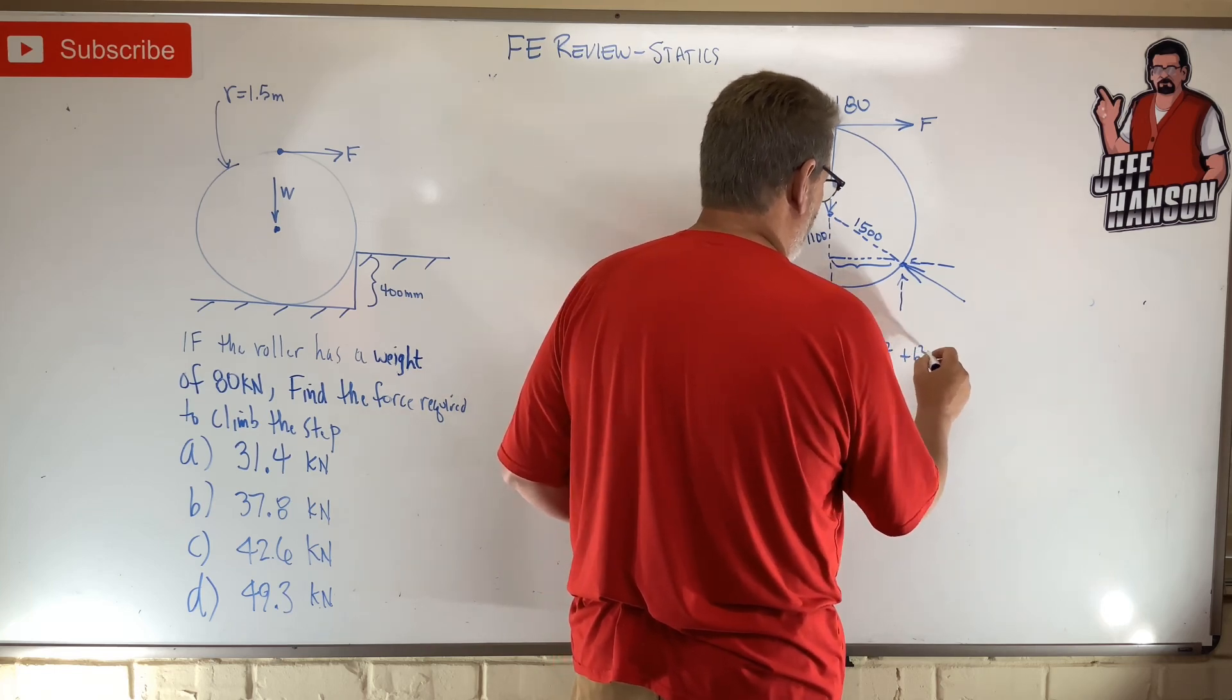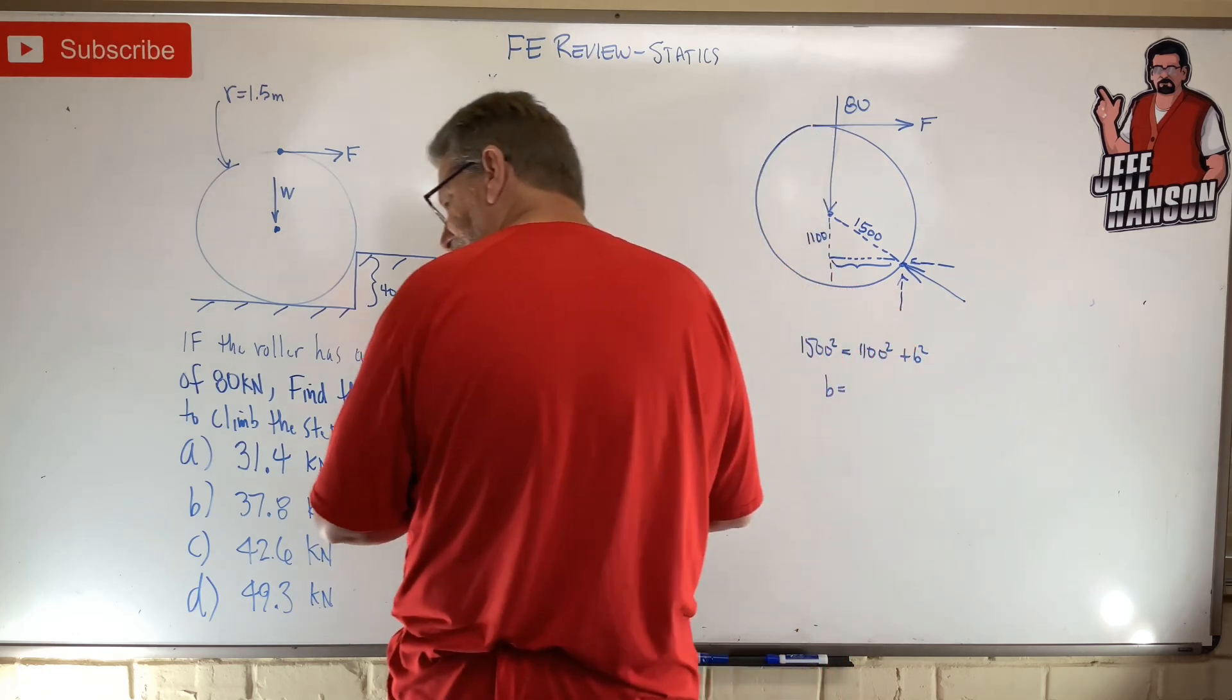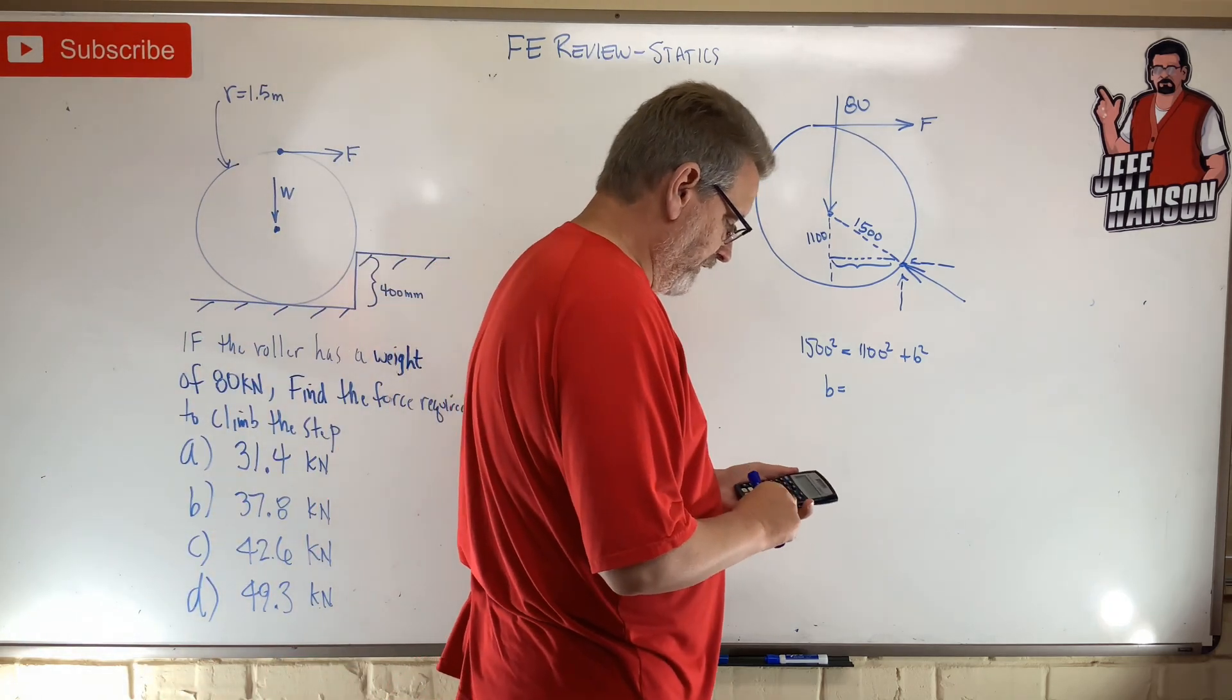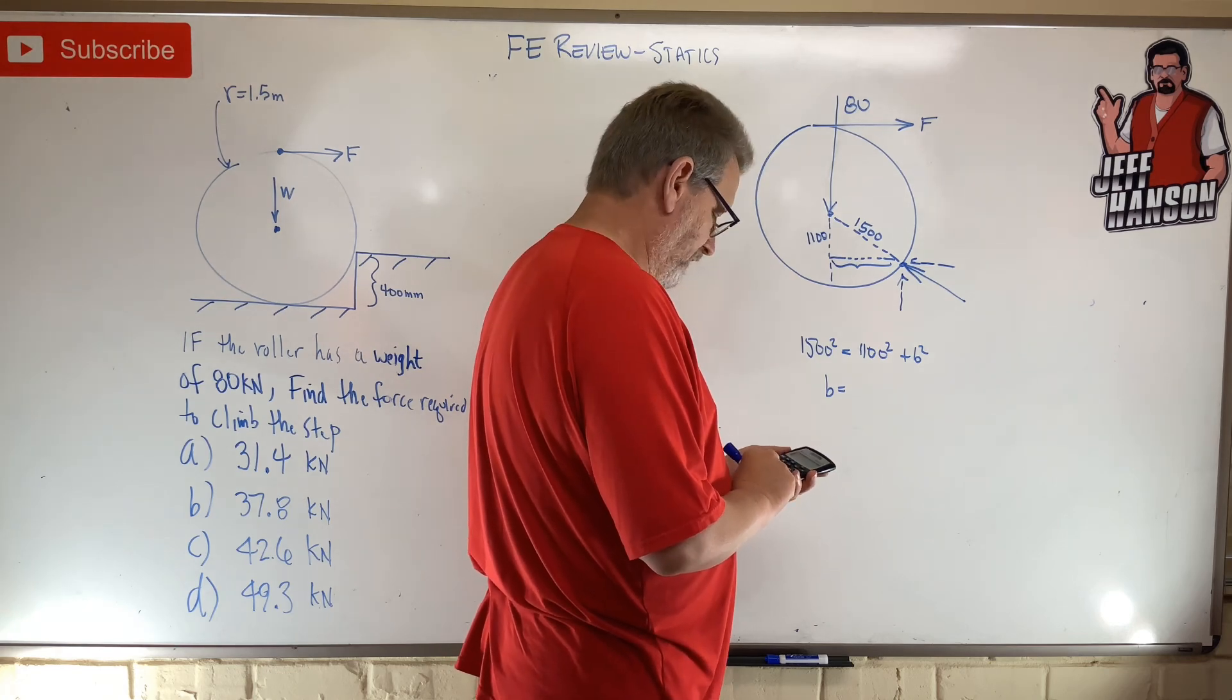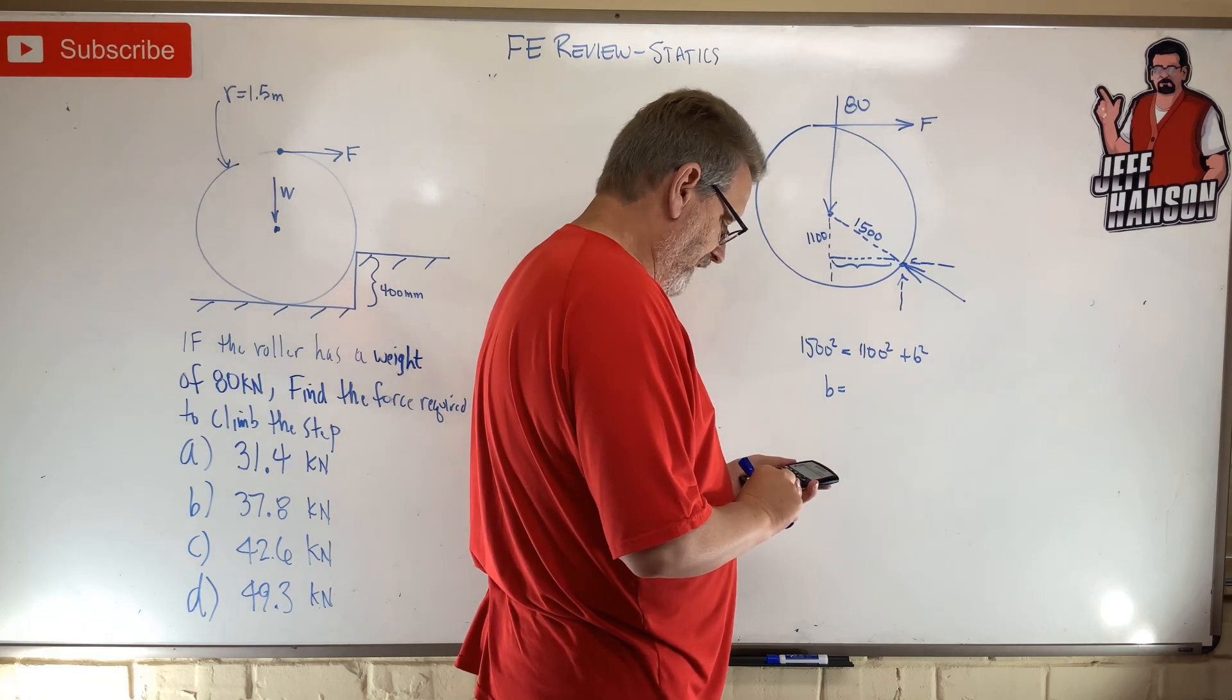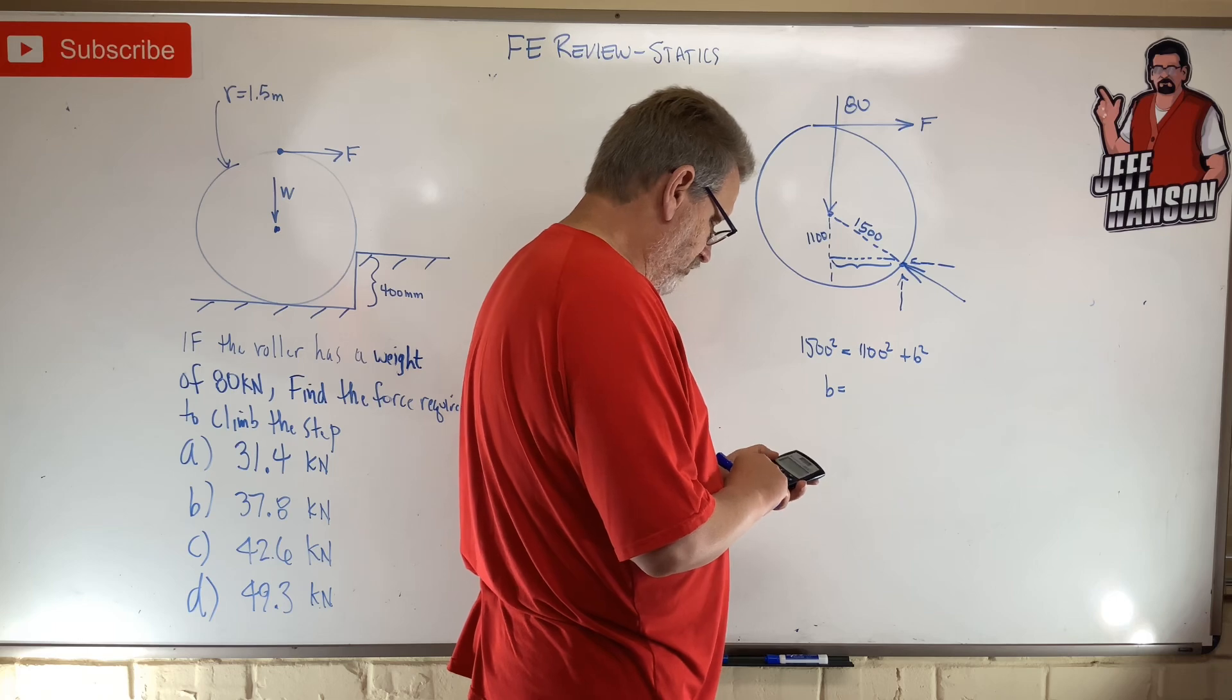plus b squared. Okay, so b is equal to, how much is that? Okay, 1100, oh clear, 1100 squared equals 1500 squared minus answer equals and then square root of that equals